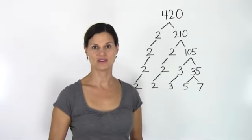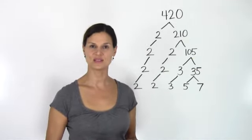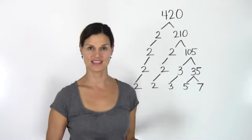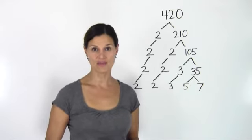All composite numbers can be created by multiplying together a set of prime numbers. This is called prime factorization.